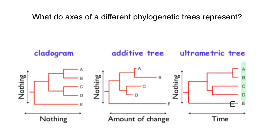Now compare with the additive tree — and don't think that only speciation E survived here. Just like in all other phylogenetic trees, the y-axis stands for nothing. But the x-axis here stands for the amount of change, usually in DNA. As you can see, species E accumulated the most changes. Species A and B, since their speciation event, accumulated different amounts of DNA change. Looking at this tree, we can see the relationship between species, just like in a cladogram, but also how much DNA change each species accumulated since its speciation event.